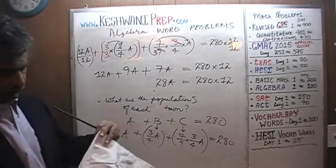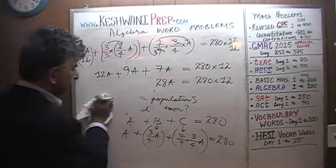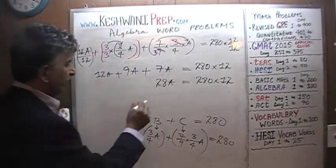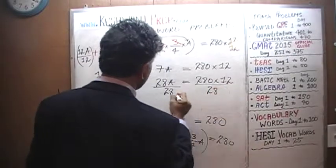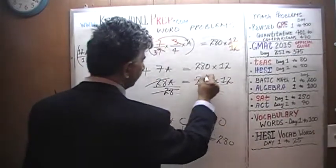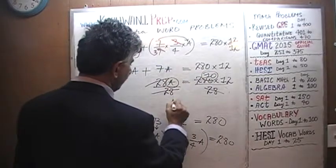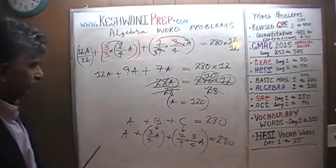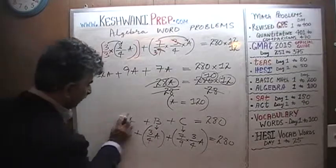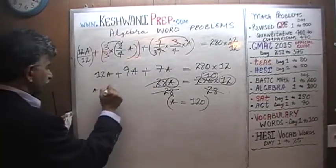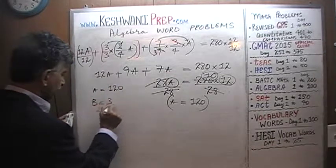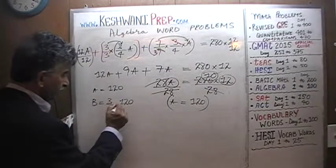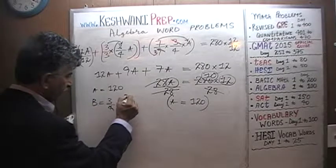We're going to leave these quantities here so we can use them later. Divide both sides by twenty-eight and we are done. Twenty-eight goes away; 280 divided by 28 is just ten, which means the population of A is ten times twelve which is one hundred and twenty. If A is one hundred and twenty, B has to be three quarters of it. A quarter of 120 is 30, so three quarters is ninety.